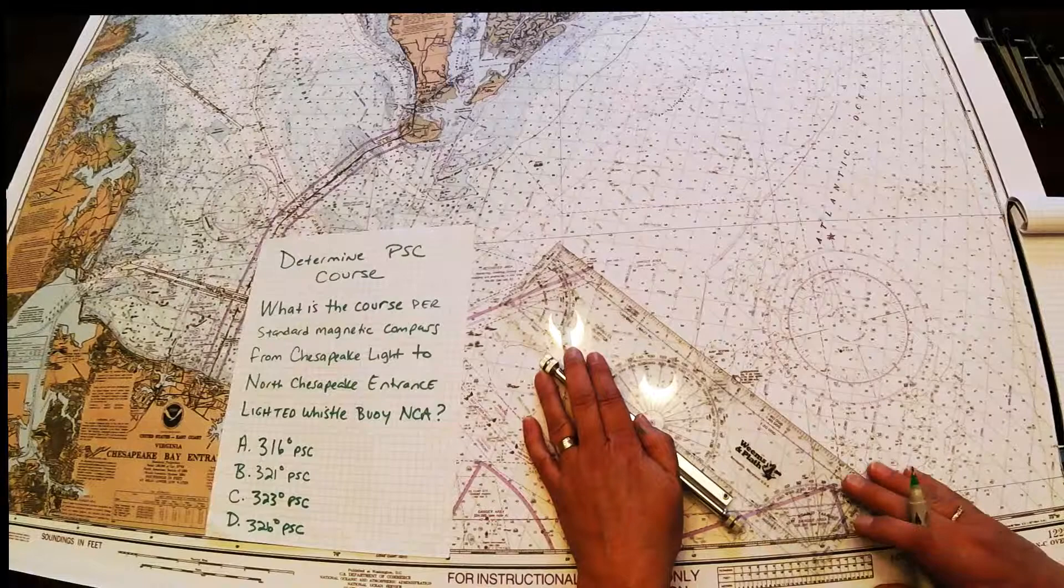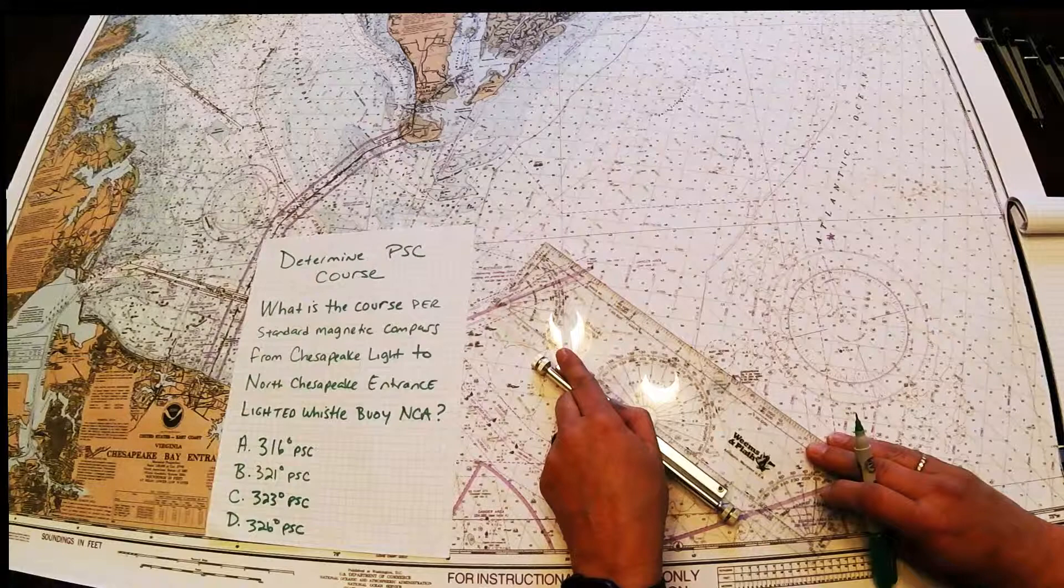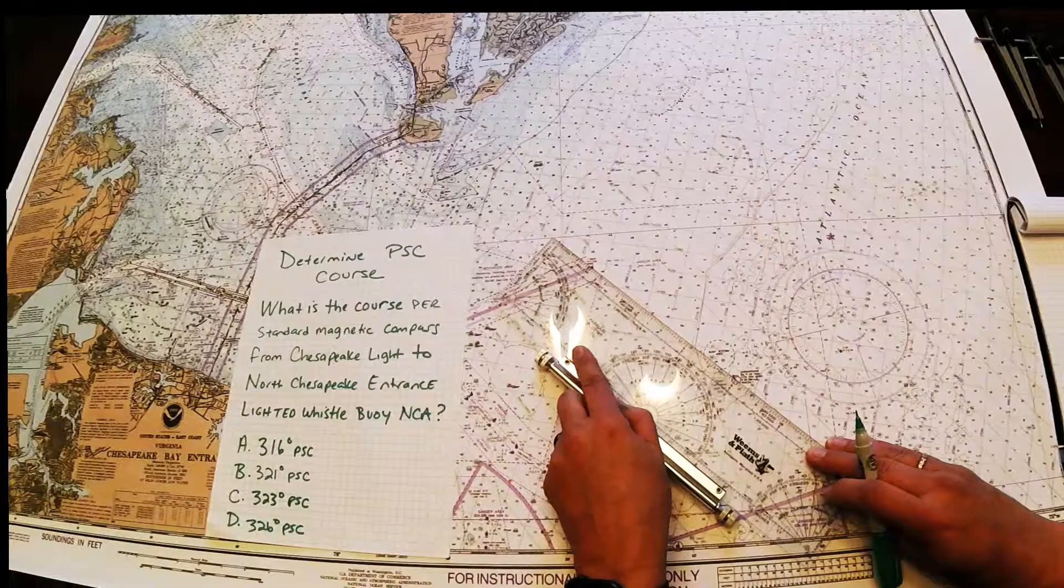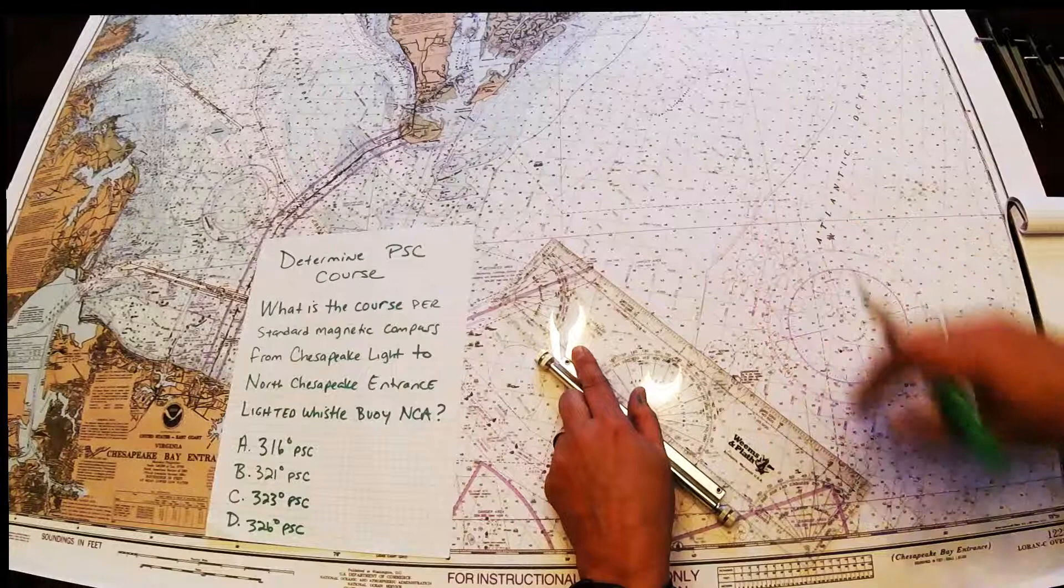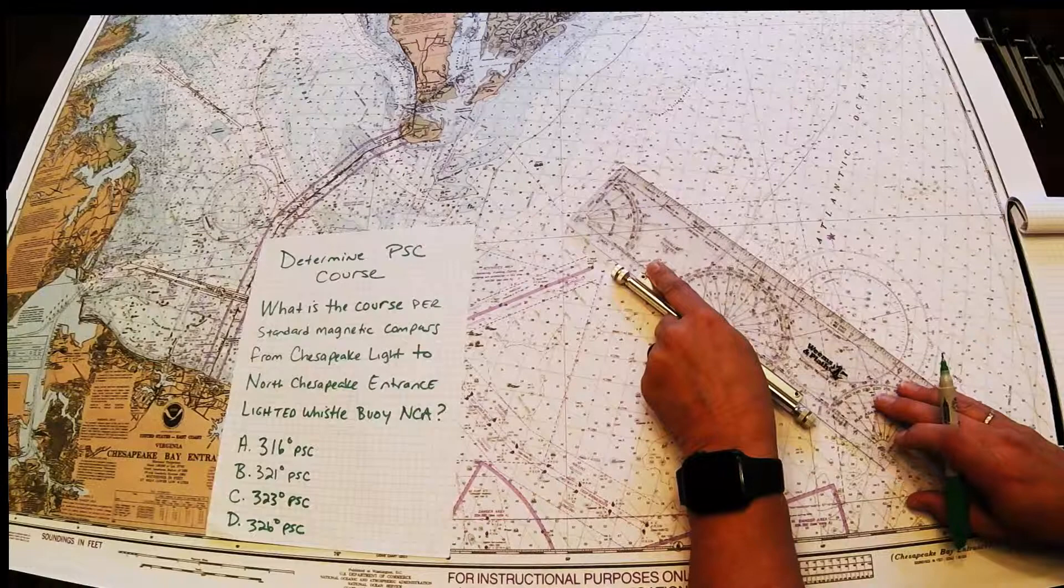Making sure I get it nice and even. Now some people like to use this black line that's indicated inside there just to make sure it's straight. So I'm going to line up these two nav aids. And because it says from Chesapeake Light to the buoy, I know that's in a northwesterly direction so I've got to stay on the northwest side of the compass rose once I get there. Roll it up to the crosshair of the compass rose.